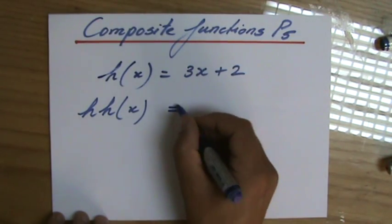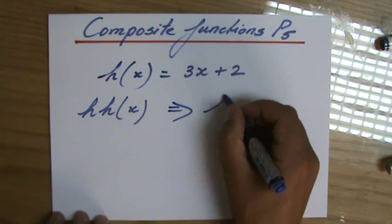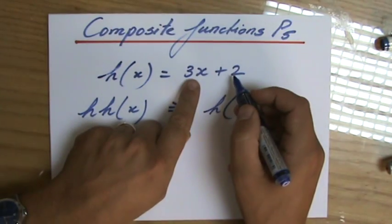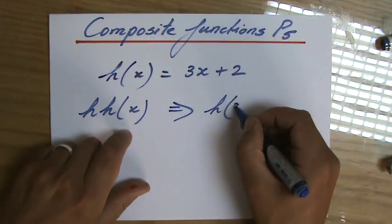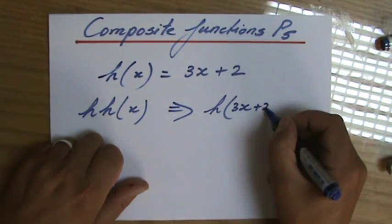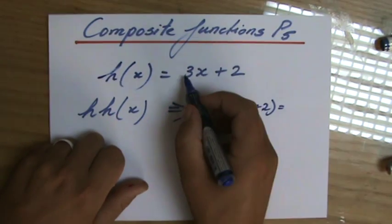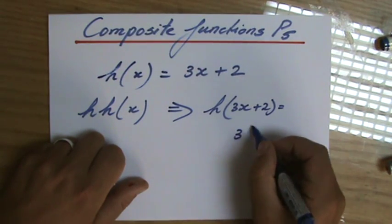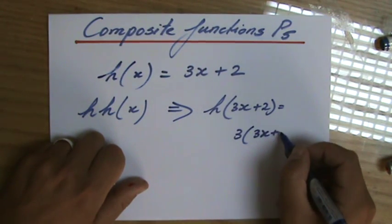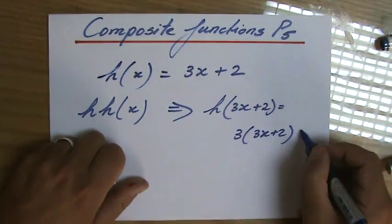Let's just see what that translates to when I start doing the maths. So h, I'm going to plug in the function into the function. So for x, I'm going to put in 3x plus 2. So 3 times x becomes 3 times (3x + 2) plus 2.